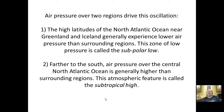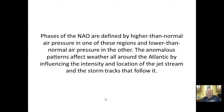Air pressure over two regions drives this oscillation. The high latitudes of the North Atlantic near Greenland and Iceland generally experience lower air pressure — this zone of low pressure is called the subpolar low. Farther to the south, air pressure over the central North Atlantic is generally higher — this is called the subtropical high. Phases of the NAO are defined by higher than normal air pressure in one of these regions and lower than normal in the other — they flip-flop and oscillate.